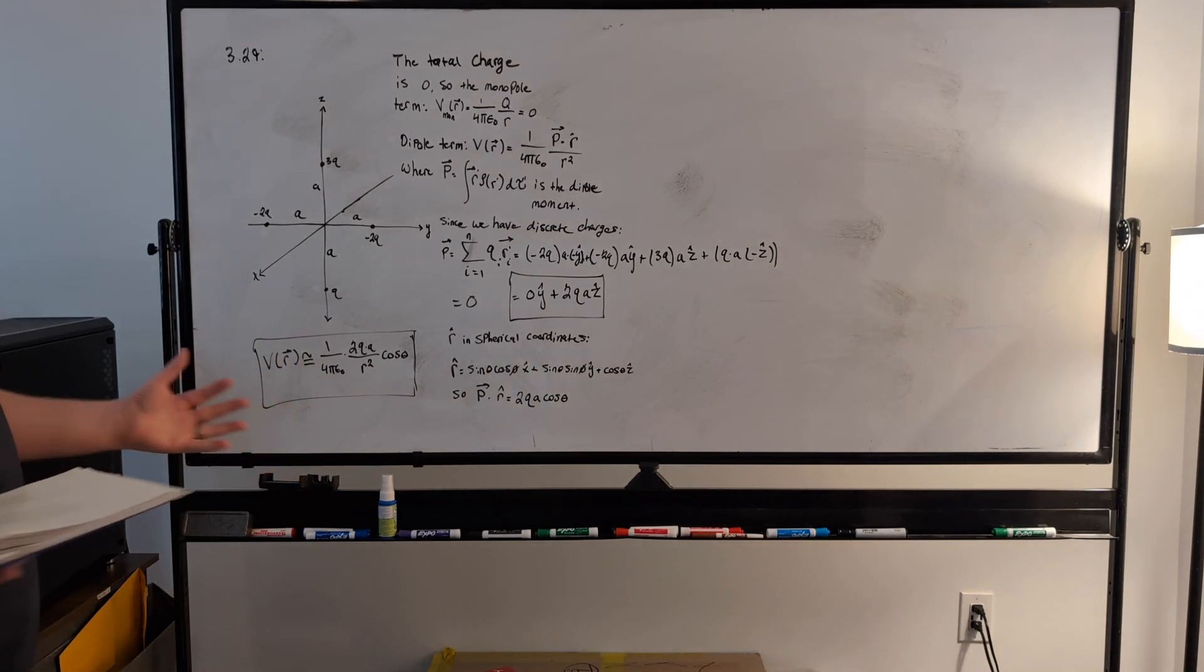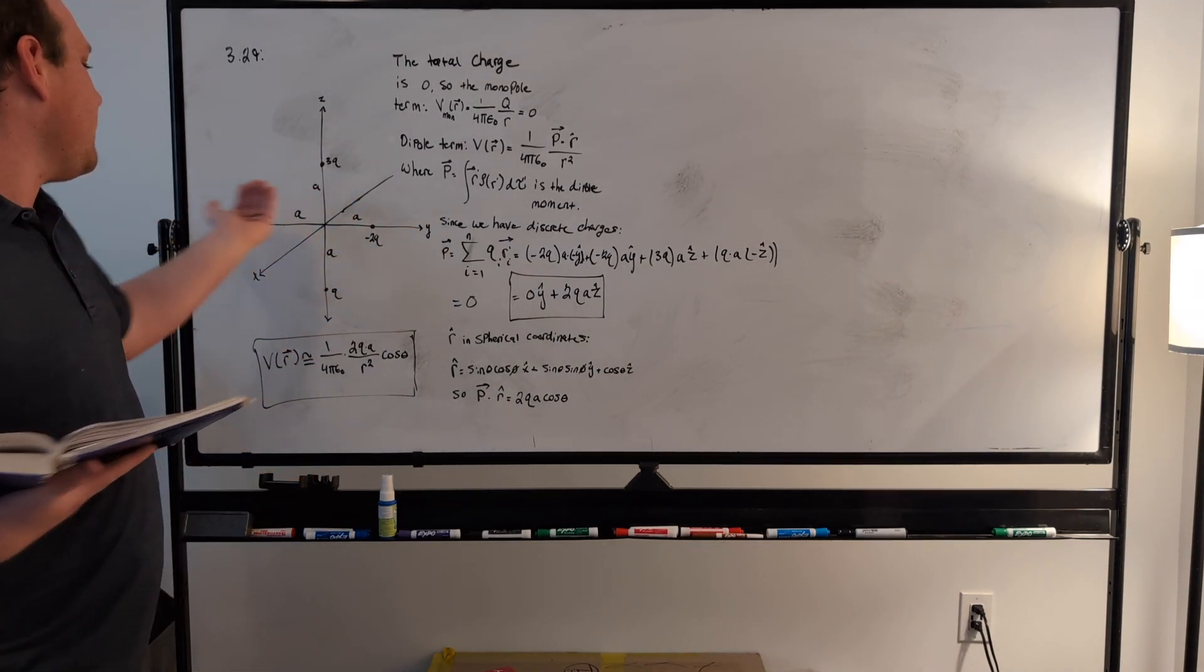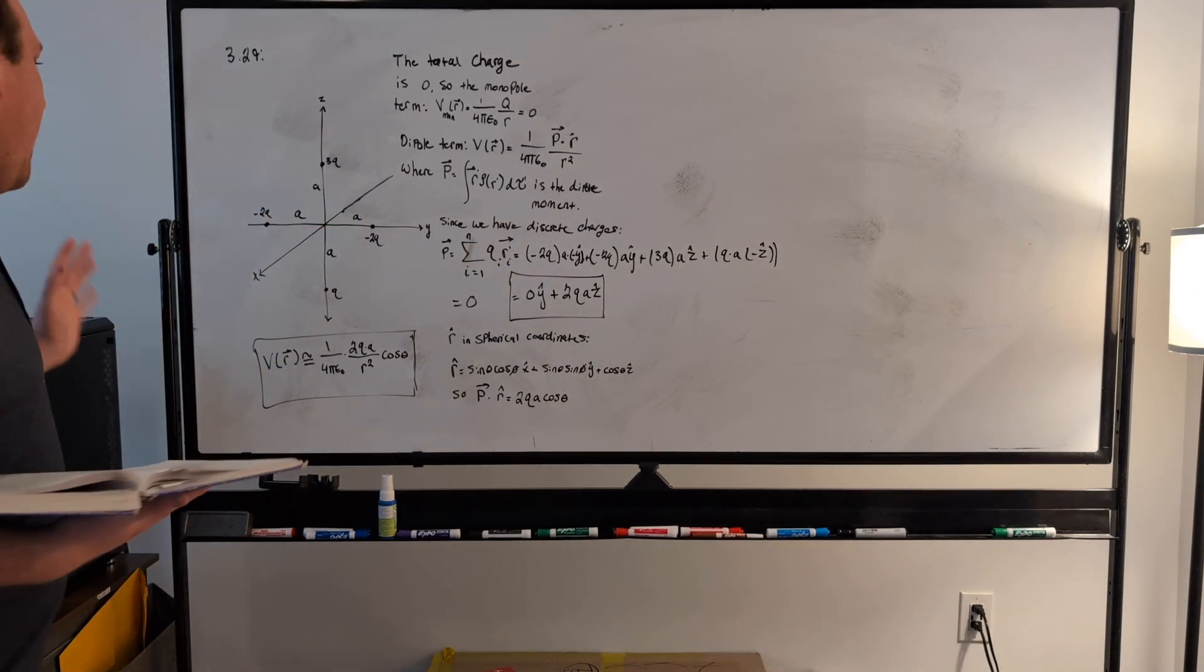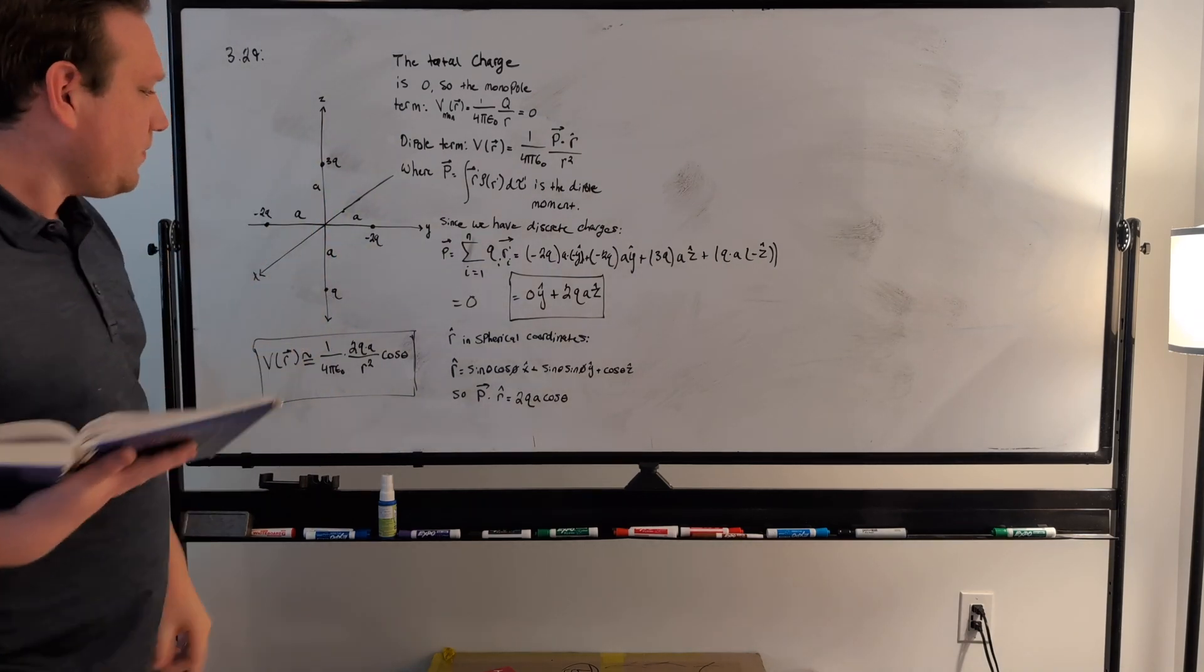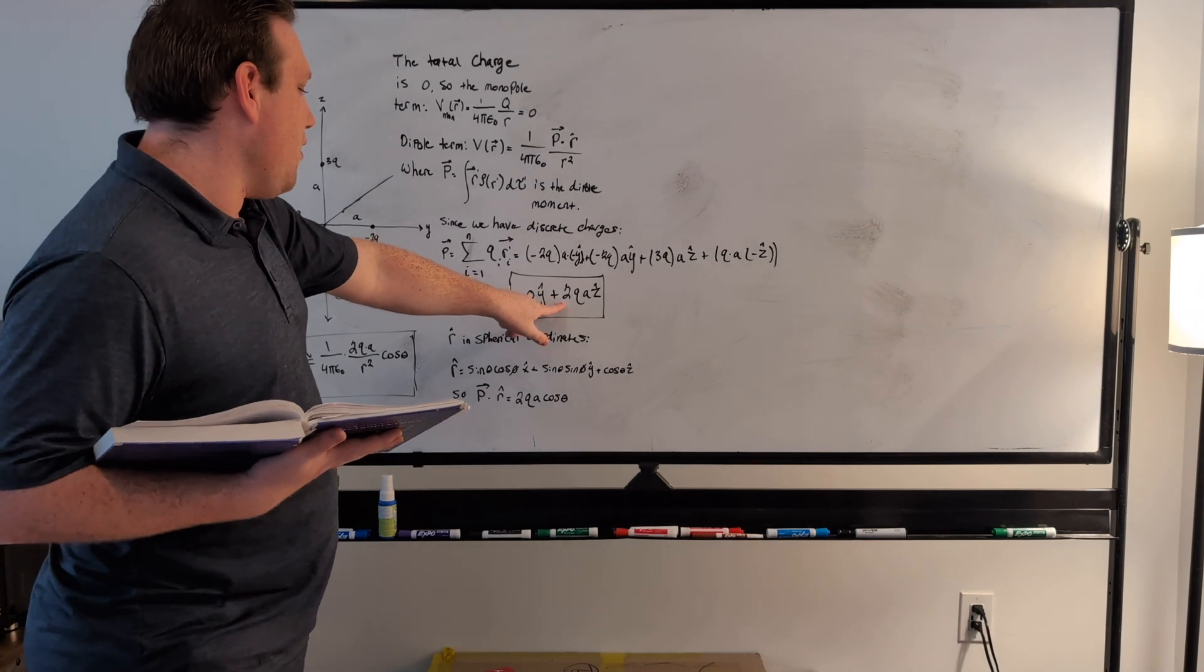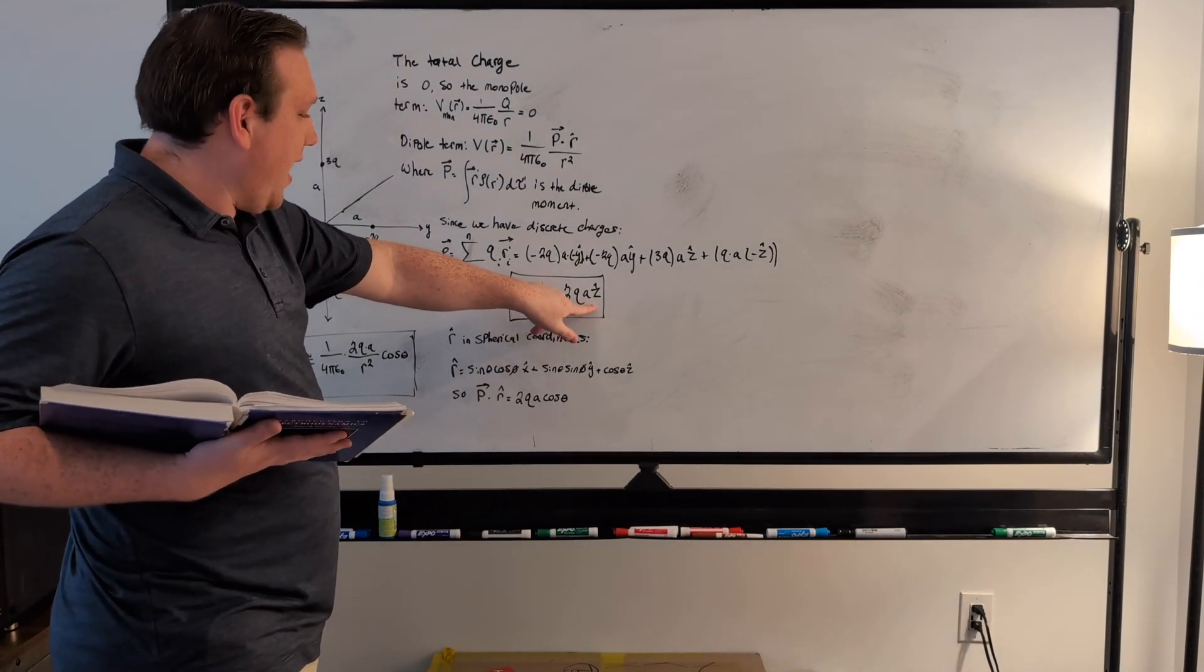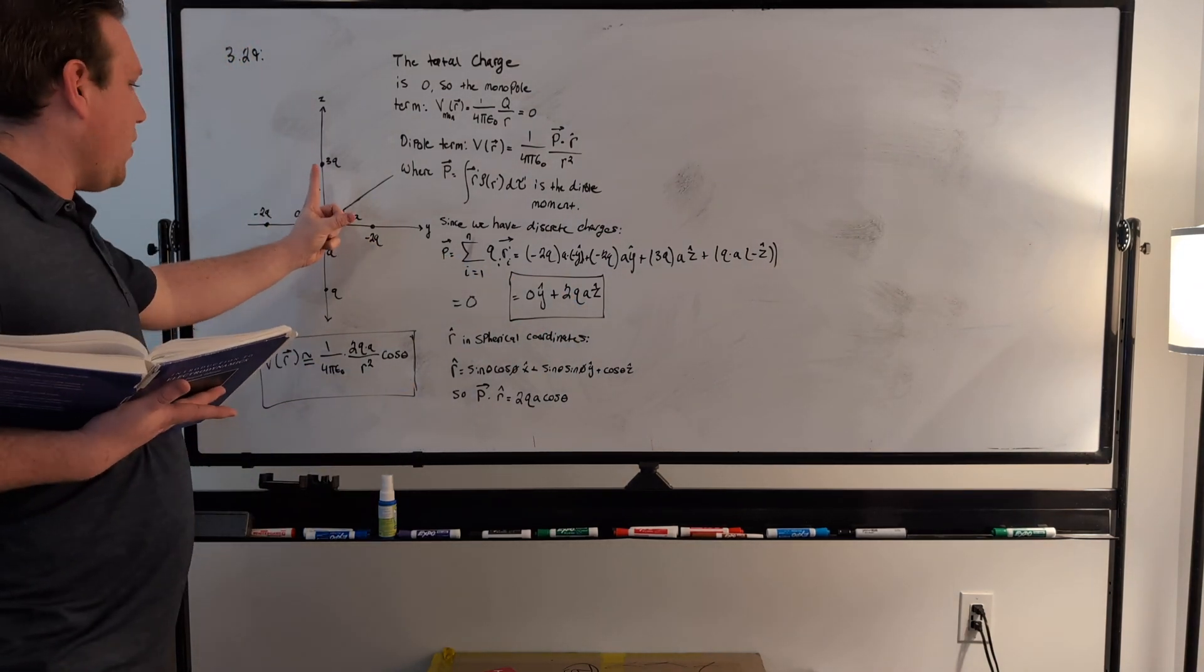If you do that sum, you basically get that the y-hat term goes away, which makes sense because it's symmetrical. The charge configuration is symmetrical on the y-axis, so the dipole moment, we can intuitively see that the dipole moment should be pointing this way, because that's where the majority of the charge is, and that's what we get here. So we effectively get that the dipole moment is 2q a z-hat, so our dipole moment is pointing this way.